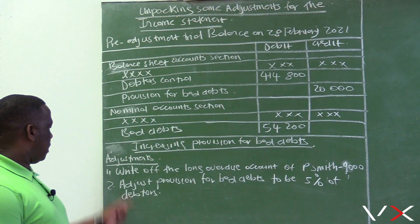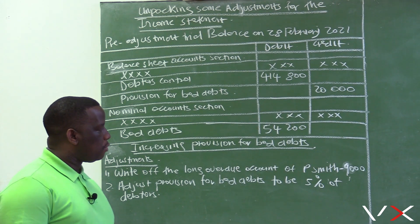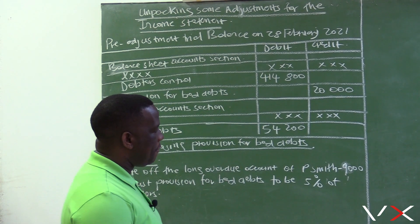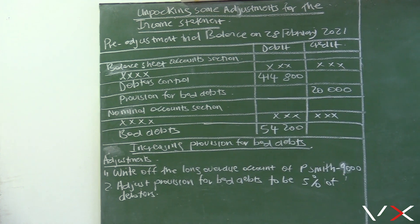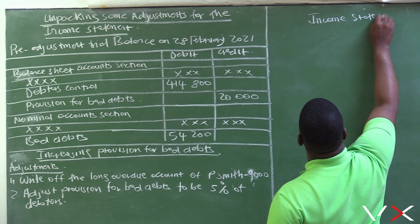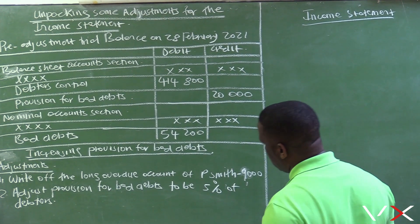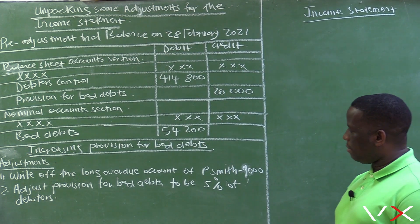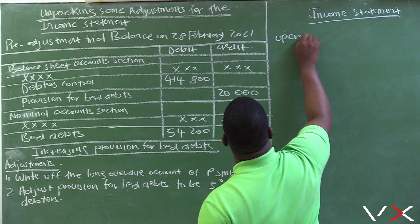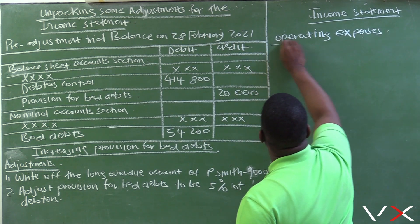Let's start by looking at the first adjustment. It says: write off the long overdue account of Peacemith, R9,000. We want to look at how this adjustment is going to affect the income statement. I am not going to write the full income statement, but I will go straight to the section where this adjustment will be recorded. Because this section is affecting bad debts, it will be under operating expenses in the income statement.